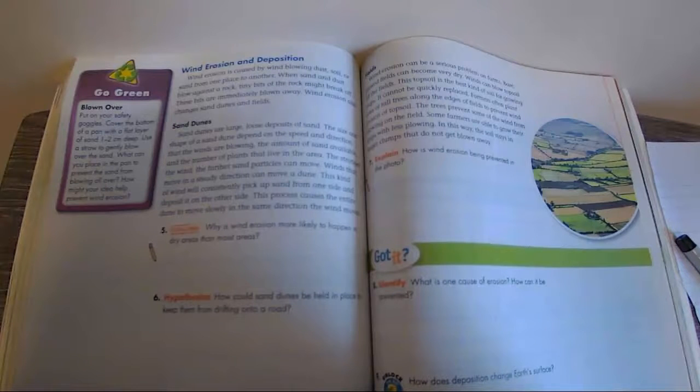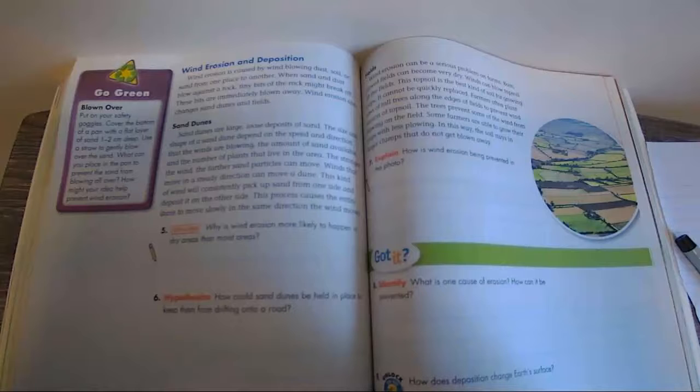Sand dunes. Sand dunes are large, loose deposits of sand. The size and shape of the sand dune depends on the speed and direction that the winds are blowing, the amount of sand available, and the number of plants that live in the area. The stronger the wind, the farther sand particles move.